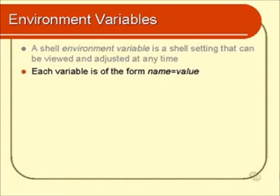I like to think of variables as little boxes. The box has a label on the outside — that is the box's name, or in this case it's the variable's name. And then you can put things into that box, and what you put into that box is the value of the variable. By using the equal sign, you're essentially saying that value goes into that box.